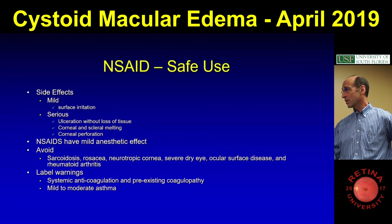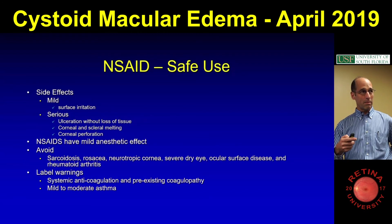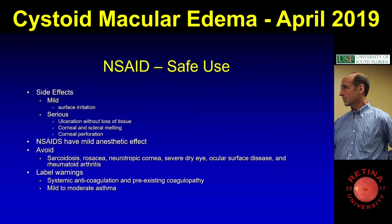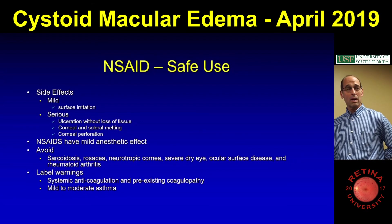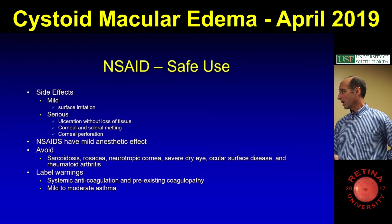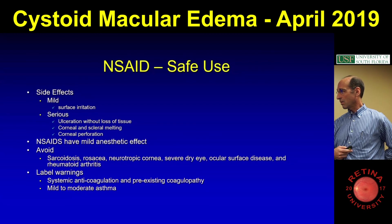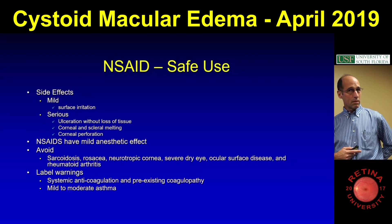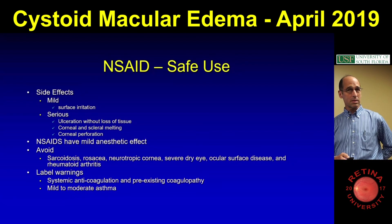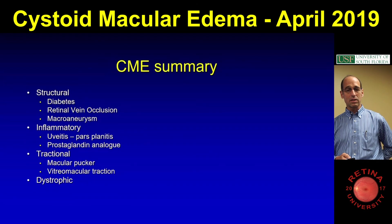For NSAIDs there are some issues — one of my staff flagged a prescription for ketorolac because the patient was on Pradaxa. There is a worry about surface irritation, and you can get corneal problems if the surface is abnormal. Because of the mild anesthetic effects, there are warnings about people who have corneal disease. There's also a warning on the label about systemic anticoagulation for topical NSAIDs. And for asthma — for your topical beta blockers and NSAIDs, you should ask about that.